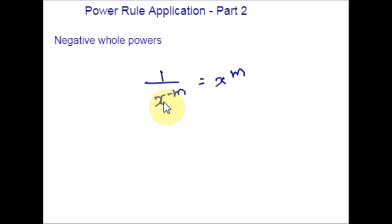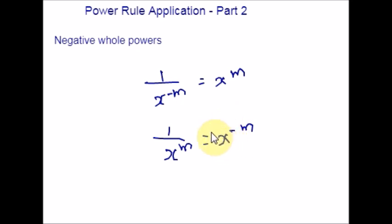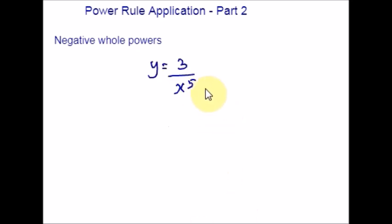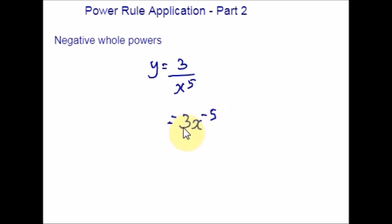The same law applies in reverse — shifting from numerator to denominator also reverses the sign of the exponent, for any non-zero m. This helps you rewrite these functions in a form which matches the first part of the power rule. Here is an example. Students may mistake n = 5, but by using the law of indices, you rewrite the expression so the variable is in the numerator. Now a = 3 and n = −5.